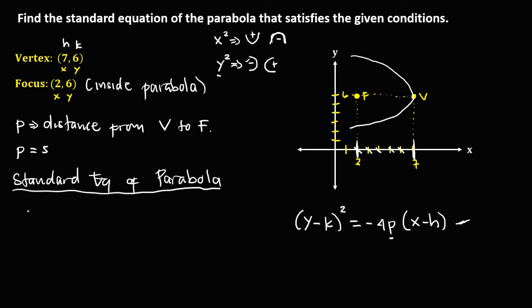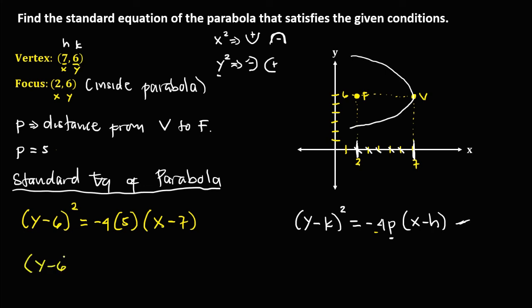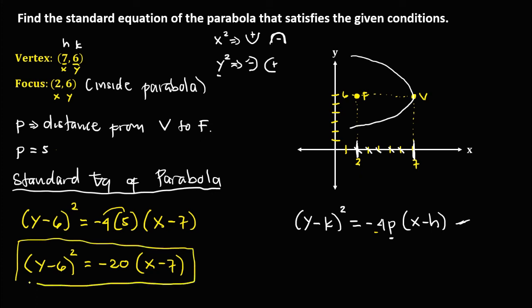Now substituting into the formula: y minus 6, squared, equals negative 4 times 5, times x minus 7. Simplifying: (y − 6)² = −20(x − 7). This is the standard equation of the parabola.